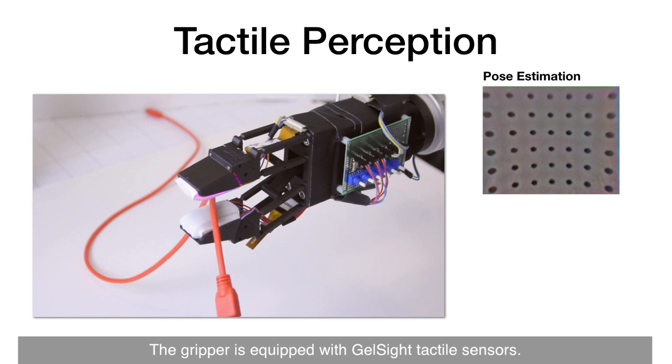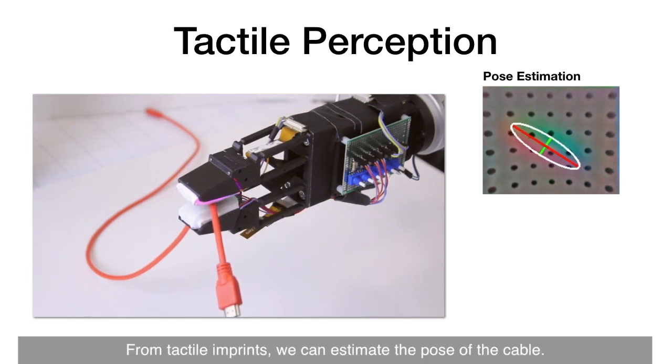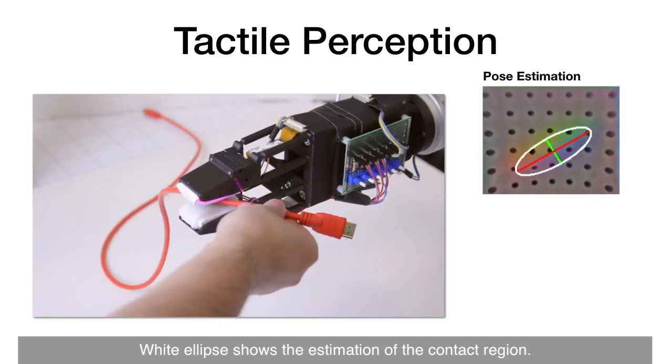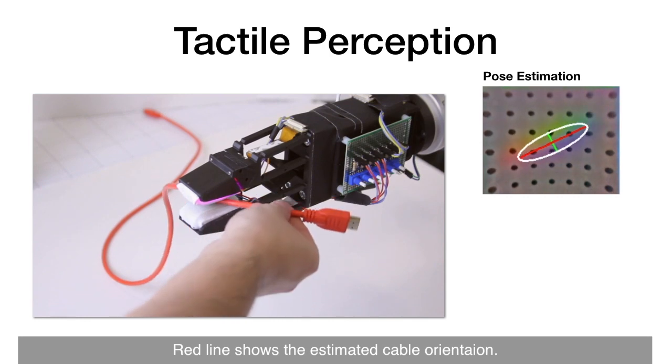The gripper is equipped with jaw-side tactile sensors. From tactile imprints, we can estimate the pose of the cable. White ellipse shows the estimation of contact region. Red line shows the estimated cable orientation.